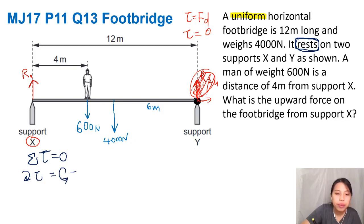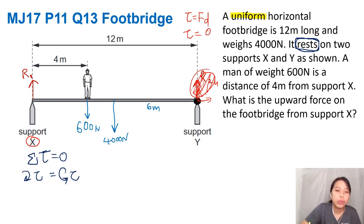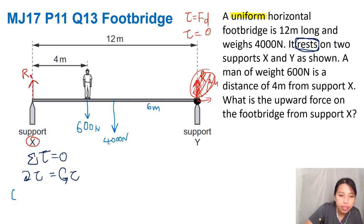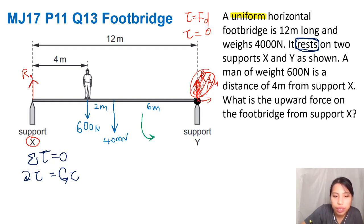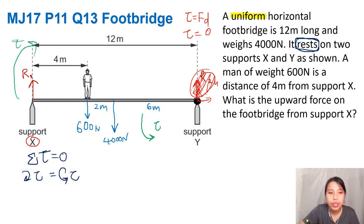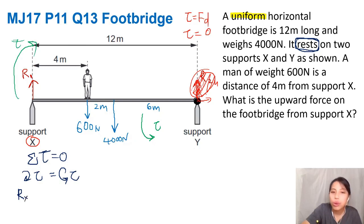Net torque zero means clockwise torque equals anti-clockwise torque. For the clockwise forces, we have 600 newtons — we need that distance. The whole bridge is 12 minus 6 minus 4, so that's 2 meters. Wait — I got it reversed. My pivot is on the right side, so the weights cause anti-clockwise torque and R1 causes clockwise torque. So clockwise torque is Rx times the whole length, 12 meters.